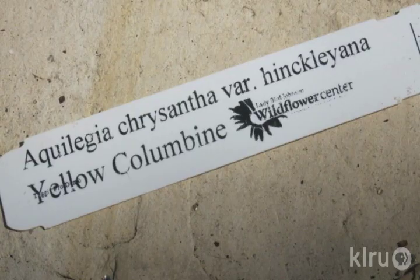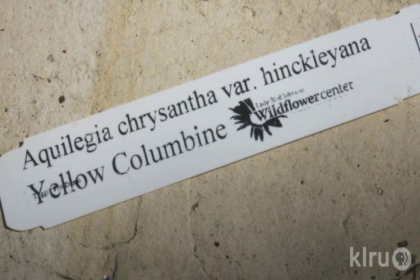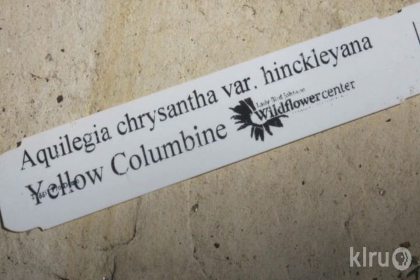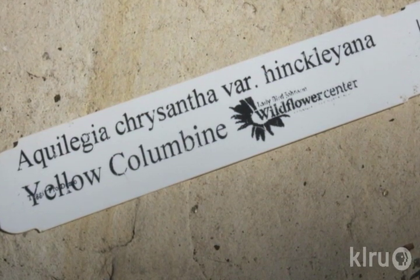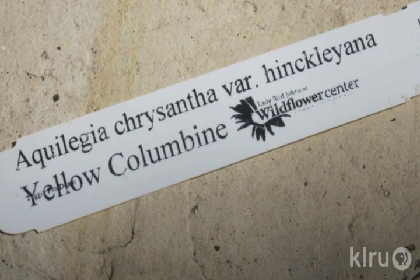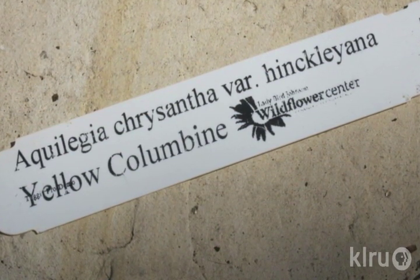Varieties of the same plant are naturally occurring and are usually found in geographically distinct regions from each other, but they hybridize easily if brought into contact. If you see the shortened VAR, then a third name on a plant tag after the species name, that indicates that the plant is a variety.